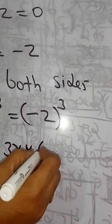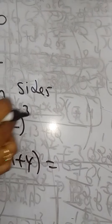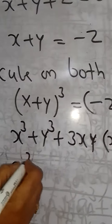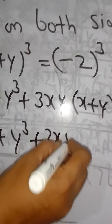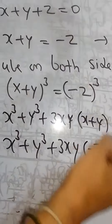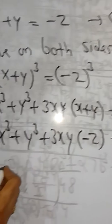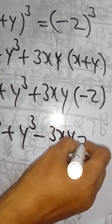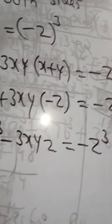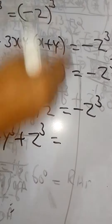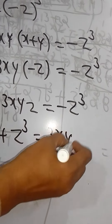Substituting x plus y equals minus z: x cube plus y cube plus 3xy into minus z equals minus z cube. So x cube plus y cube minus 3xyz equals minus z cube. Rearranging, x cube plus y cube plus z cube equals 3xyz. Hence proved.